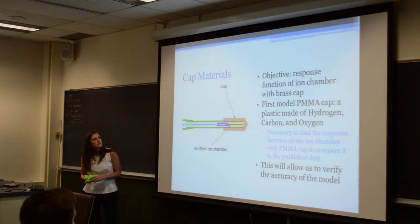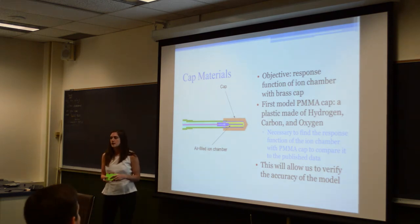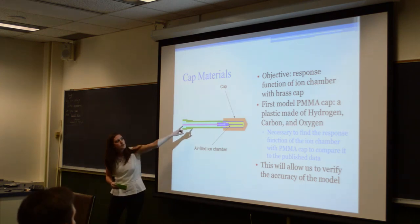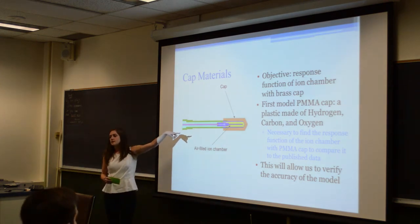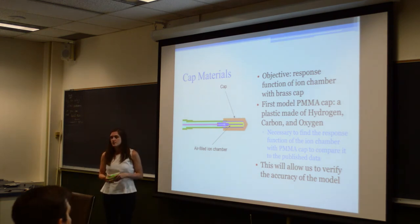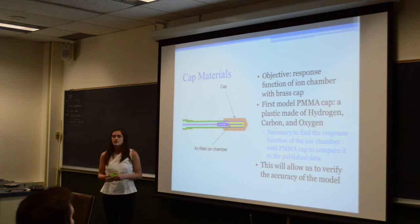This is the close-up of the ion chamber and cap, which is now a big part of our geometry. The photon beams hit the cap and release secondary electrons, which form ion pairs. The ion pairs are separated by an electric field created by the electrons within the air chamber. My objective was to create a response function for the brass cap.